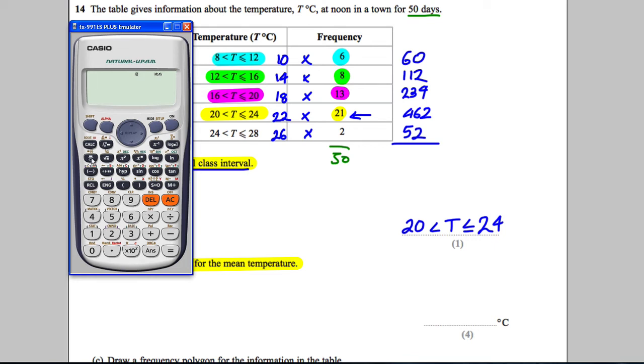So we're going to add these up, and we're going to divide by 50. So we're going to add up 60, add 112, add 234, add 462, add 52. And we're going to divide that by 50, and we get the answer 18.